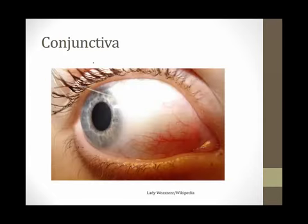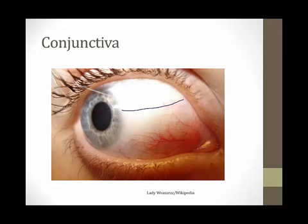Now let's talk about the conjunctiva. Looking at the eye on screen, you can see the white sclera, but you cannot see a transparent layer that sits on top of it — that's the conjunctiva. It actually wraps around the back of the eye and reflects to cover the underside of the upper eyelid. The conjunctiva is exposed to the environment just like the cornea, and so it is vulnerable to a number of infections.